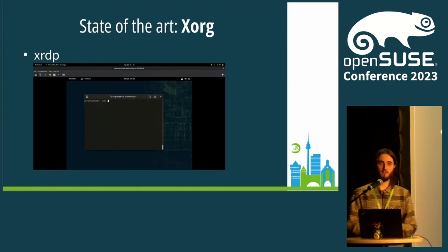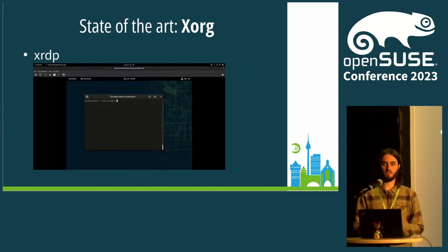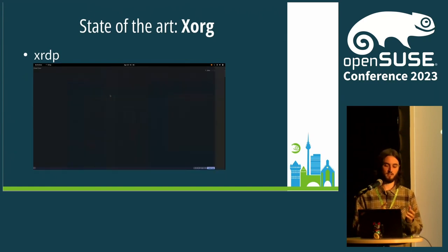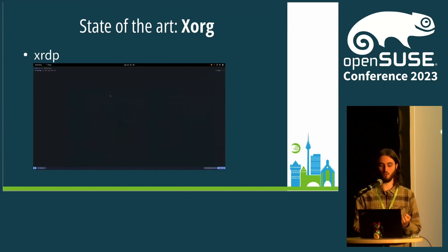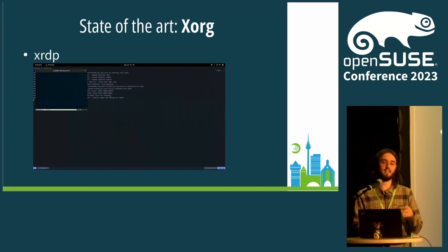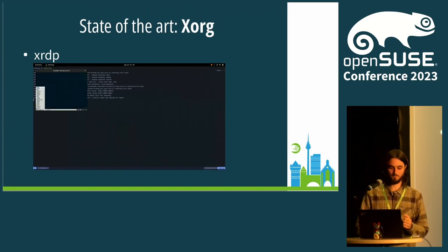Then there's also XRDP. It's very similar — it also starts a headless X.org server, but in this case instead of using the VNC protocol, it uses the RDP protocol. It's a bit different because you get a small greeter and you can use it to authenticate and then you get the user session you want.